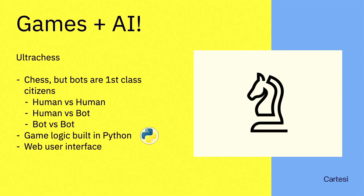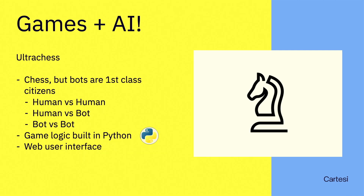Another example involves chess and AI. In online chess, people cheat by feeding moves to a computer engine and using its responses. This developer flipped the concept: instead of playing as a human, you train your bot to be the best chess player in the world. He built an ultra chess game in Python where you submit your bot, train and tune your AI, and compete. All games happen inside the Cartesi machine, so if someone tries to tamper with the result, you can dispute it.